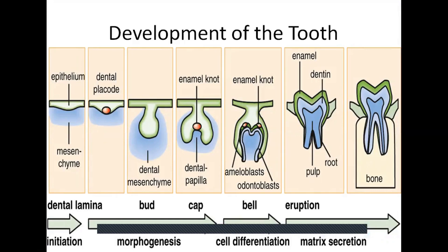Primary teeth and permanent molars arise from the dental lamina. Permanent incisors, canines and premolars arise from the primary predecessors. Failure of initiation results in congenitally missing teeth, and excessive budding results in supernumerary tooth formation. These two points — failure of initiation resulting in congenitally missing teeth and excessive budding resulting in supernumerary teeth — are very important for dental board exams.